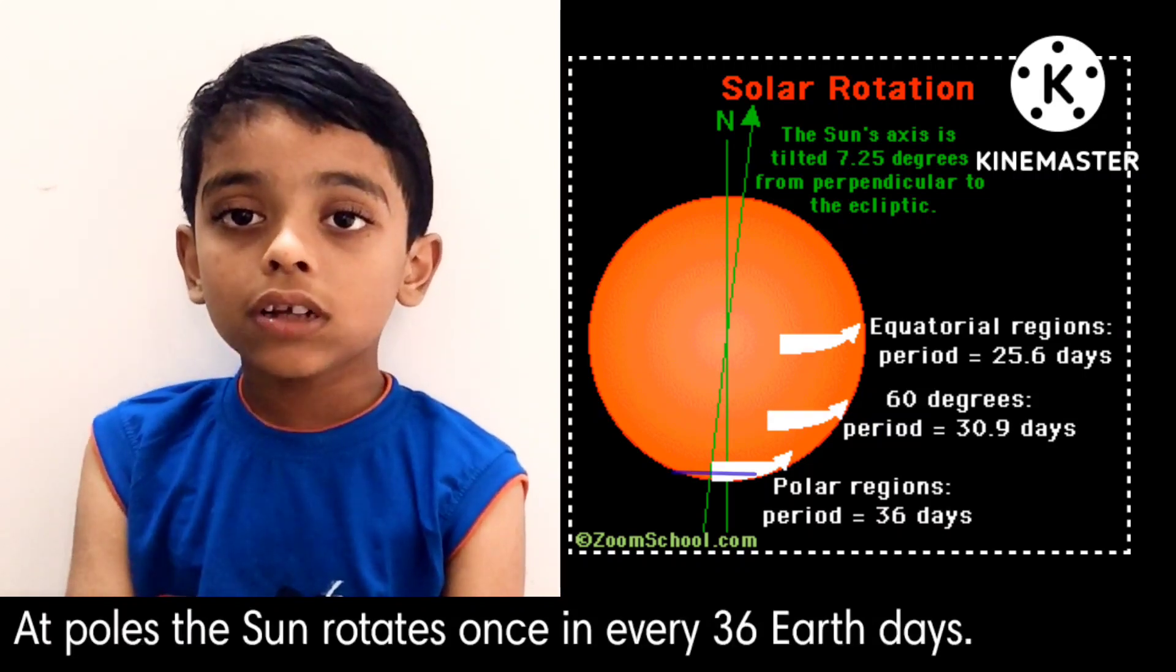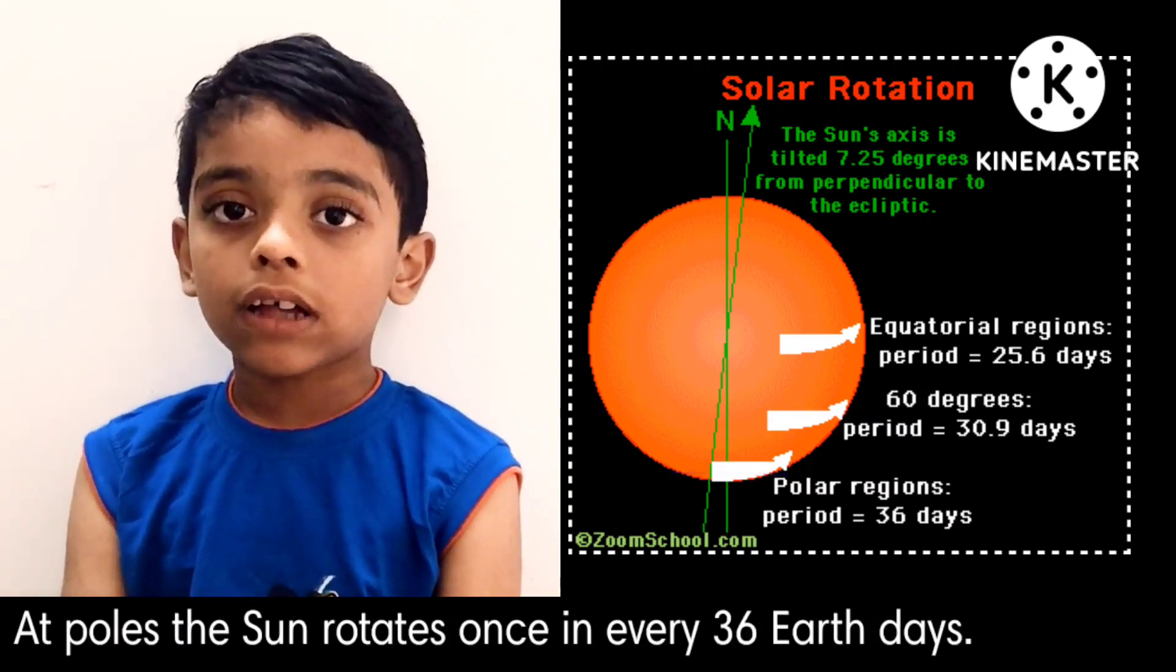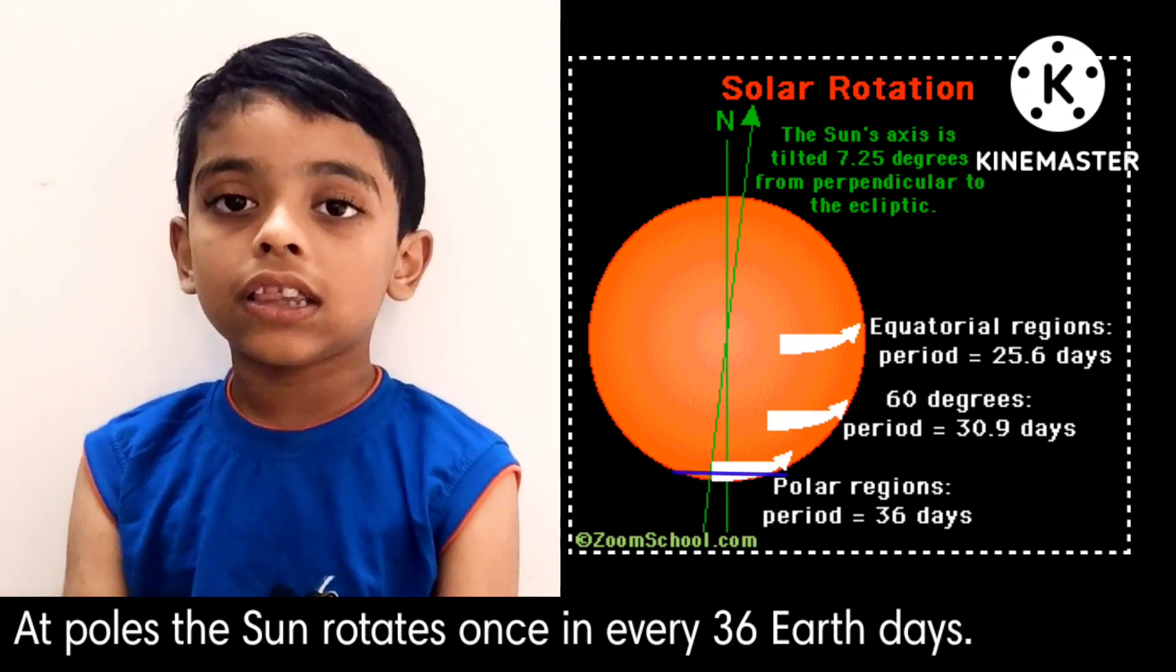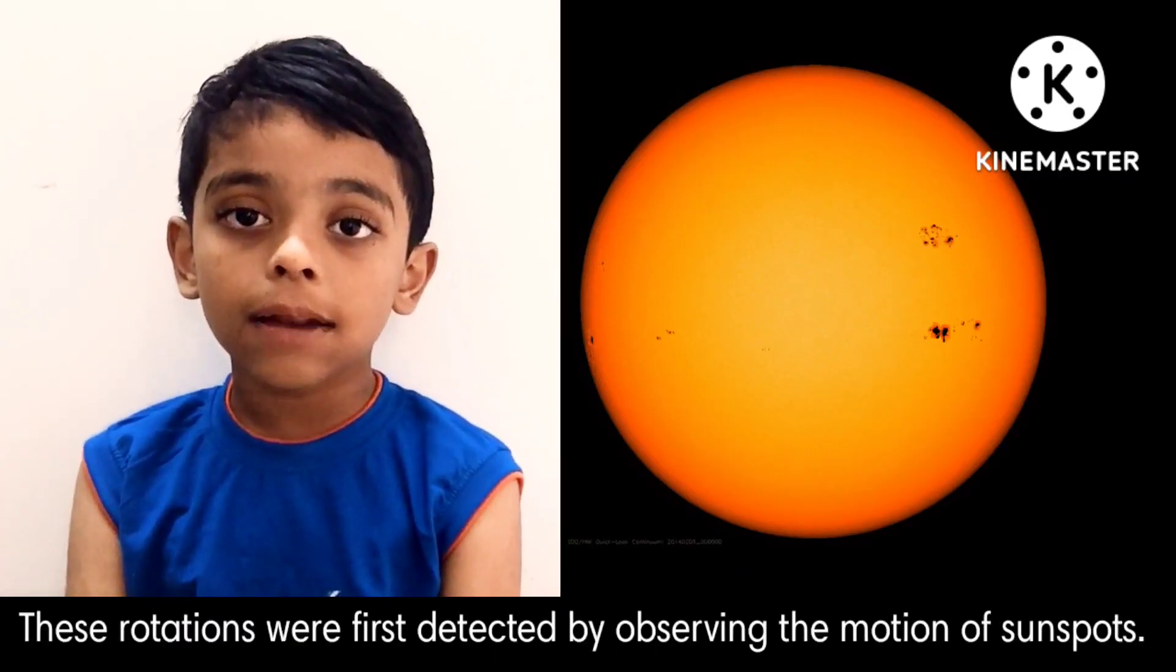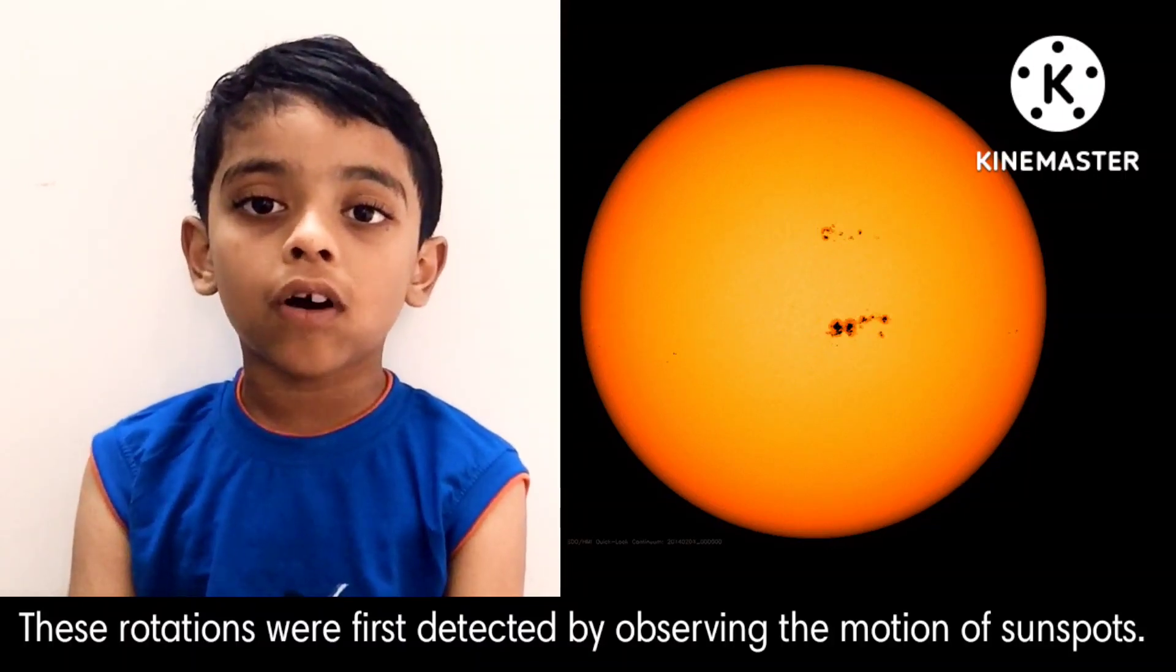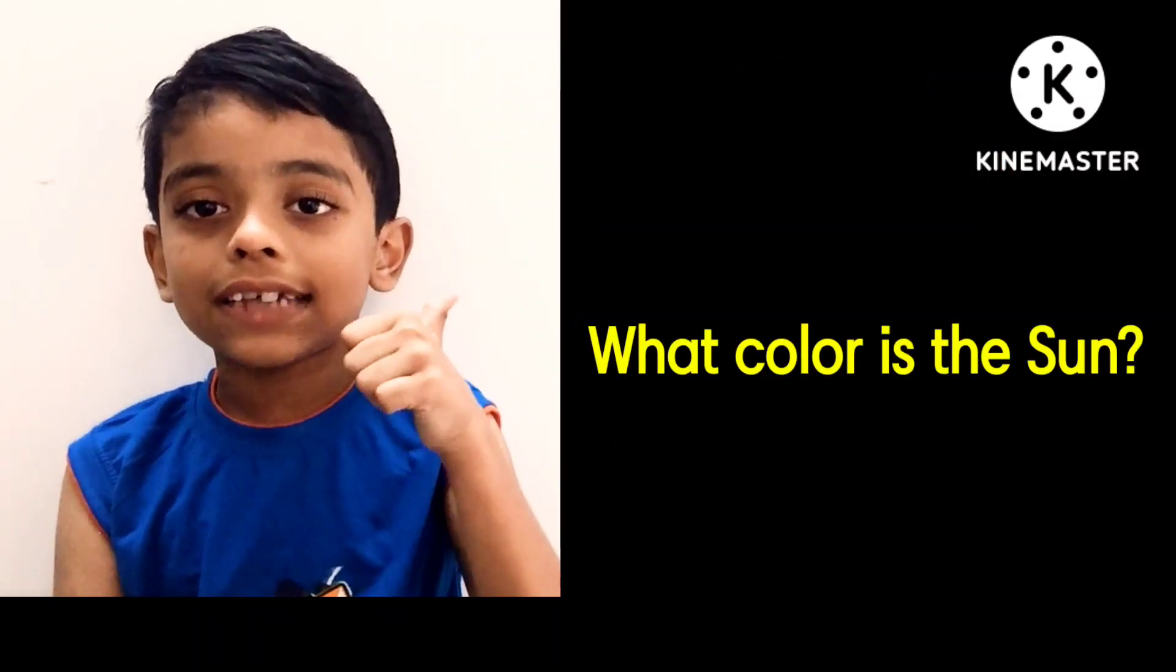But in its poles, the Sun rotates once in every 36 Earth days. These rotations were first detected by observing the motion of sunspots.